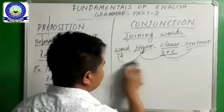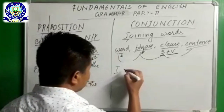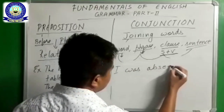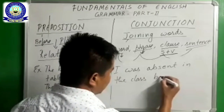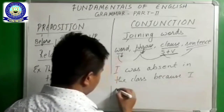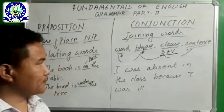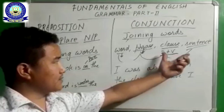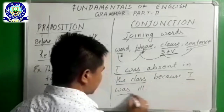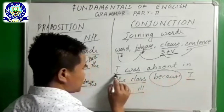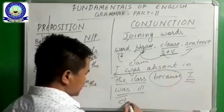Now let us see an example of clause. 'I was absent in the class because I was ill.' Here we have two clauses — 'I was absent in the class' has a subject and verb, and 'I was ill' also has a subject and verb. So 'because' is the conjunction word joining clause to clause.